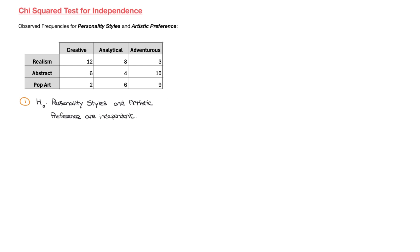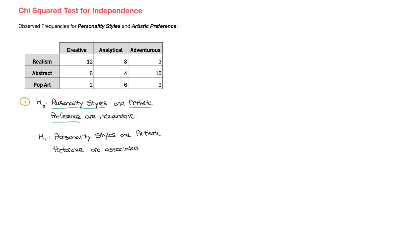The categorical variables we're studying here are personality styles and artistic preference. Our alternative hypothesis, which I write with H₁, is that our two categorical variables are not independent, in which case we'll usually say that the two variables are associated. So that would mean that personality styles and artistic preference are associated, which essentially means that there's some connection or link between those two variables.